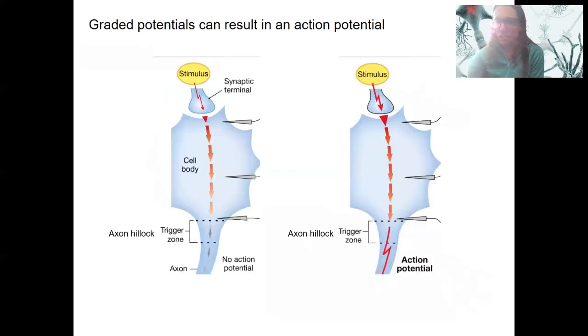Here is that idea. What I just said, graded potentials can, so may or may not, result in an action potential. Action potentials only are generated at the axon hillock. Another word for that is the trigger zone. So if depolarization is strong enough because the stimulus is strong enough, then it can reach the axon hillock and trigger an action potential if the graded potential reaches that location.